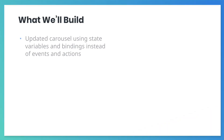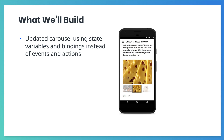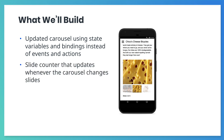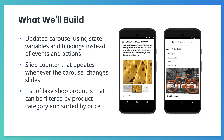Here is what we're going to build in this course. First, we will continue to refine our existing carousel. We will use state variables and bindings instead of events and actions to keep the carousels in sync. Next, we'll add a slide counter that keeps track of which slide we are currently viewing. And finally, we'll add a list of products to our website, which are loaded from a server, filterable by category, and sortable by price.